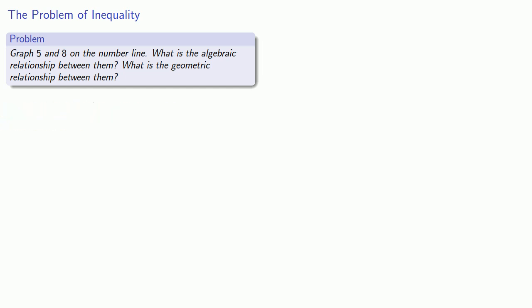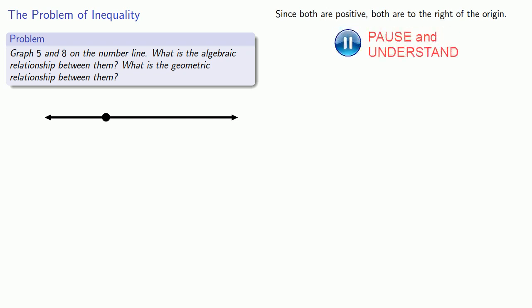We'll set down our origin and then draw a horizontal line through it to represent our number line. Now let's graph our two numbers. Since both 5 and 8 are positive, both of them are to the right of the origin. But remember the number corresponds to the distance from the origin and 8 is going to be farther to the right than 5.